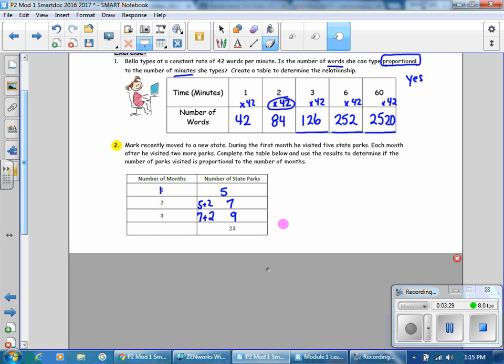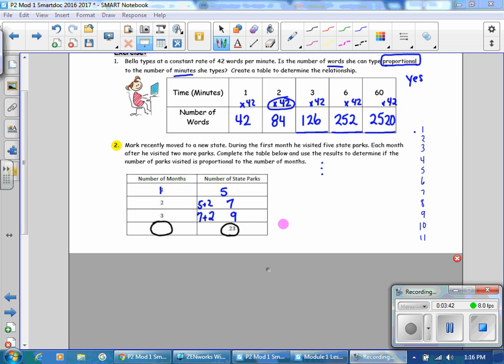Pause the video and create a table on the side of the paper to find a pattern showing how many months it took him to visit 23 parks. So I have created a table on the side of the page. One month is five parks, two months is seven, three months is nine. And notice that the pattern keeps increasing by two. So I'm just going to keep continuing the pattern until I get to 23 parks. So 23 parks, it would take Mark 10 months to visit. And so the answer is 10.